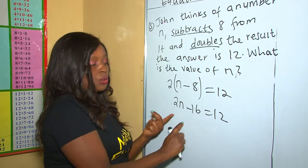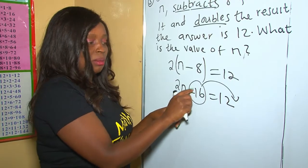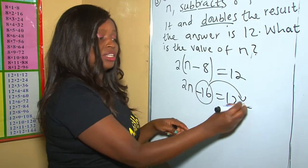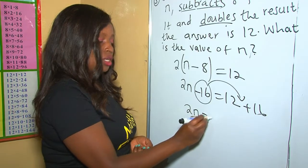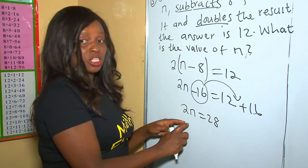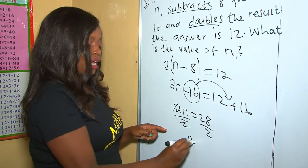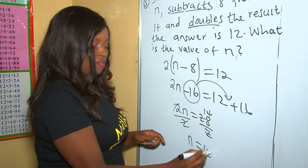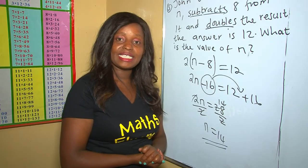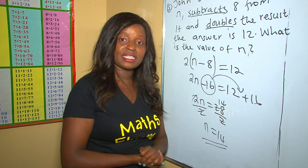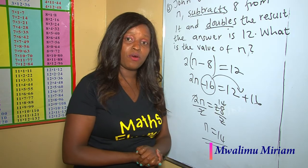Now we put like terms together: 16 crosses to the other side and becomes addition, so 2n = 12 + 16 = 28. We divide both sides by 2, giving n = 28 ÷ 2 = 14. Therefore the value of n is 14. I wish you the best — please remember to subscribe, share with friends, leave a comment, and practice, because practice makes perfect.